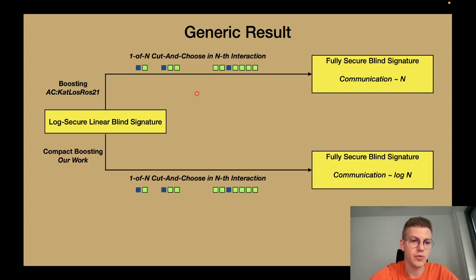Our first result is a compact version of this boosting transform, which is basically doing the same but in a compact way such that we obtain a communication which is logarithmic in this parameter n.